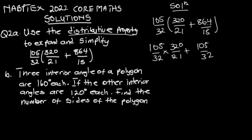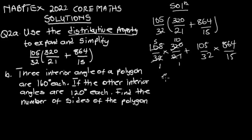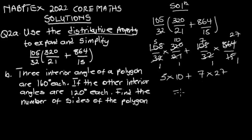From here, 32 can cancel into 320 ten times, and 21 will cancel into 105 five times, giving us five times ten. Then for the second term we get seven times 27, so altogether this gives us 50 plus 189 which equals 239. That completes part A, so now let us move to part B.